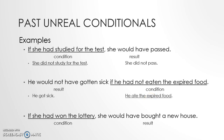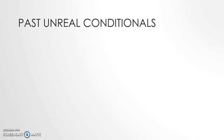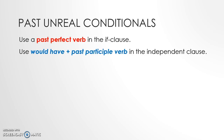Let's look at the last example. If she had won the lottery, she would have bought a new house. Remember that the condition and the result — this whole sentence — never happened. So we can say that she didn't win the lottery and she did not buy a new house. To form the past unreal conditional, we use a past perfect verb in the if clause and we use 'would have' plus a past participle verb in the independent clause.